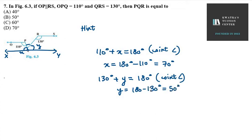Now you have to find PQR. This is my 70 degrees, this is my x. This is my y, that is 50 degrees.